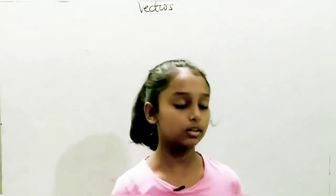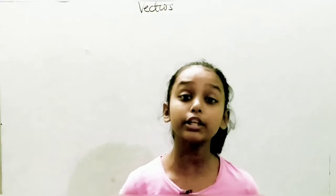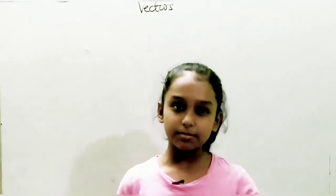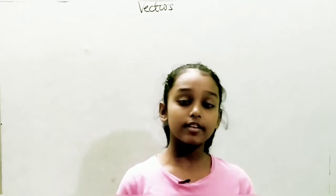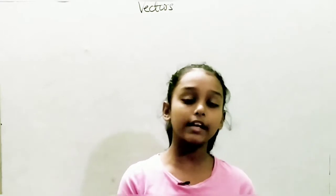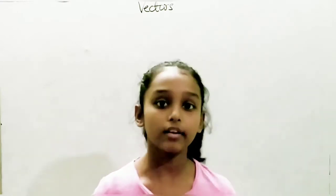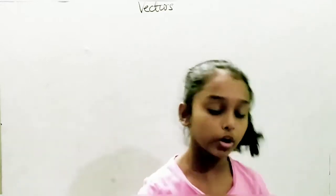First of all, I will tell you what is an equal vector. Two vectors are said to be equal if their magnitude is equal and also their direction is the same. This means that two vectors having equal magnitude and the same direction are called equal vectors. Let me write 'equal vectors' on the board.